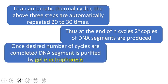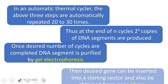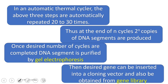Once the desired number of cycles are completed, these DNA segments, the billions of copies obtained, are purified using gel electrophoresis. This desired gene can then be inserted into a cloning vector or stored in a gene library.